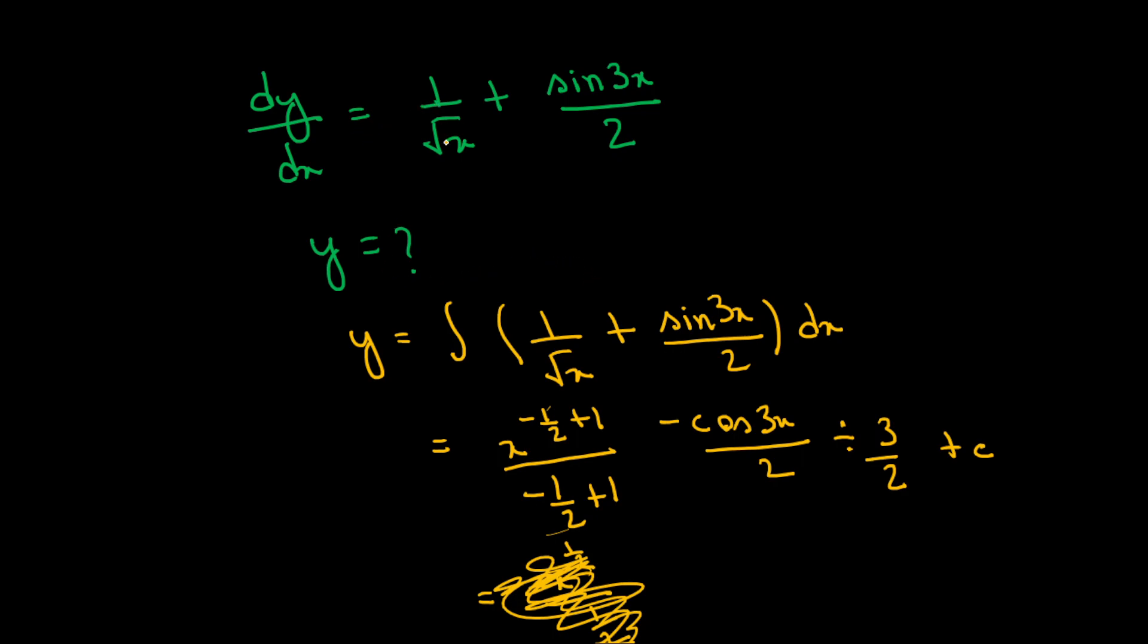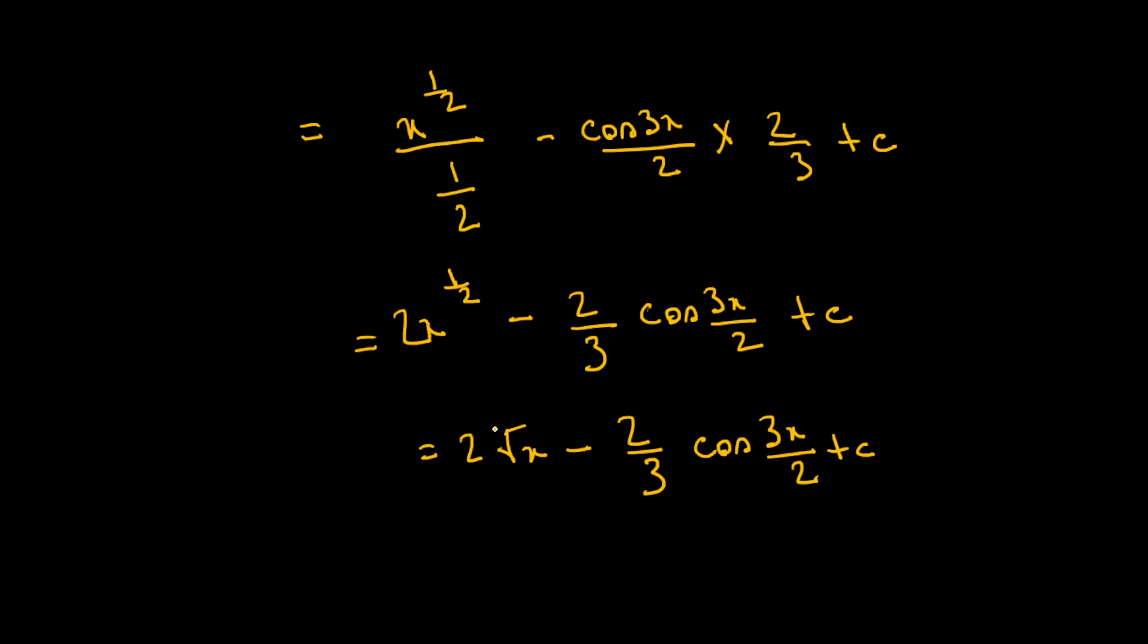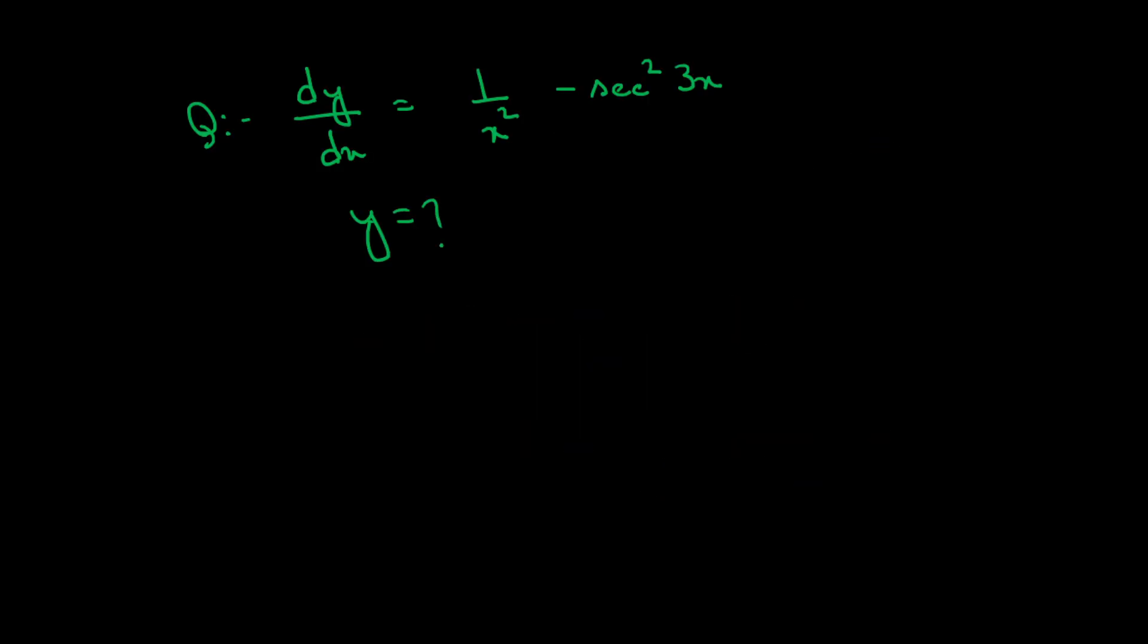1 by root x plus sin 3x by 2 integrated gives 2 root x minus 2 by 3 cos 3x by 2 plus c.